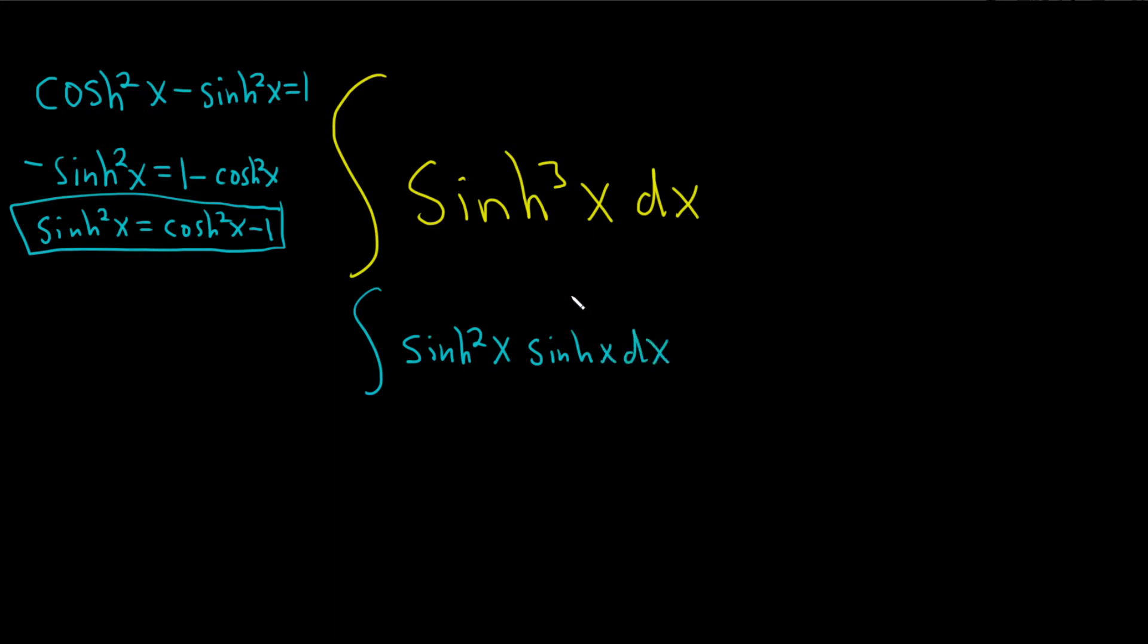And by the way, the reason I have this idea is because if it was sin cubed, you would do something similar except you would use the identities for regular trig functions. Remember, when you have sin to an odd power, you save a copy of sin, and then you let u be cosine. So here we have sinh to an odd power, so I'm thinking maybe we can try something similar. We can try to use the similar identity for the hyperbolic functions instead of the trig functions.